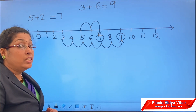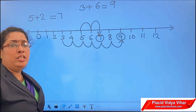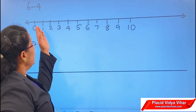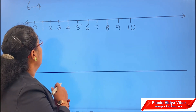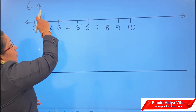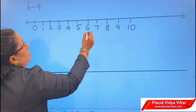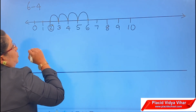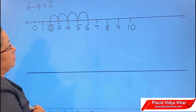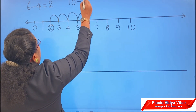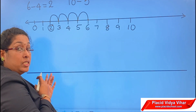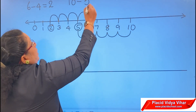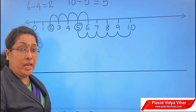Next, let us look at subtraction on the number line. For subtraction, we move to the left side. For 6 minus 4, start from 6 and move 4 numbers to the left: 1, 2, 3, 4 — we reach 2. So 6 minus 4 is 2. Again, 10 minus 5: starting from 10 and moving 5 to the left gives us 5. So 10 minus 5 is 5. This is how we do subtraction on the number line.